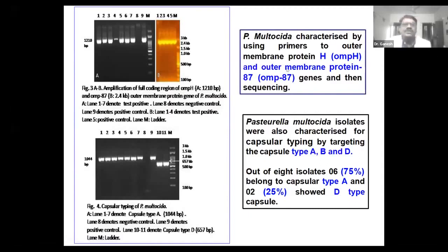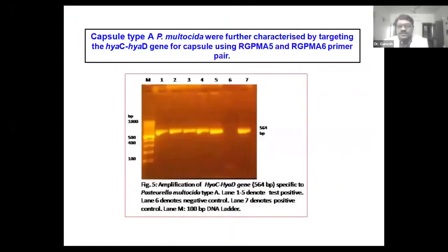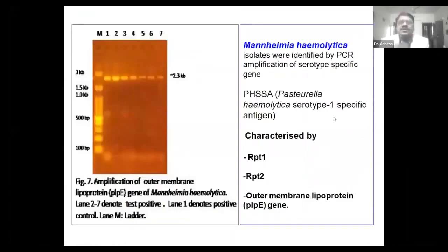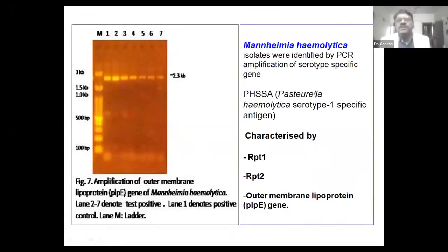We also obtained nine Mannheimia hemolytica isolates, which were confirmed by specific PCR using the PHSSA gene as serotype 1 specific Mannheimia hemolytica, and further characterized by RP21 and RP22 genes. From E. coli isolates, we identified whether they were pathogenic or non-pathogenic by PCR examination and by sequencing of these isolates. In this study, we found Mannheimia hemolytica at around 0.3%, Pasteurella multocida at 8%, and Bibersteinia trehalosi. This pathogen was previously known as Pasteurella trehalosi, but is now known as Bibersteinia trehalosi, and we are often ignoring this infection by concentrating only on Mannheimia and Pasteurella multocida.